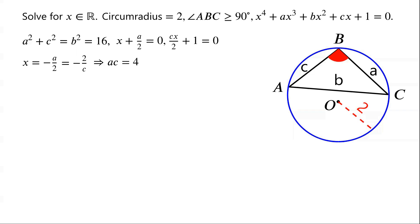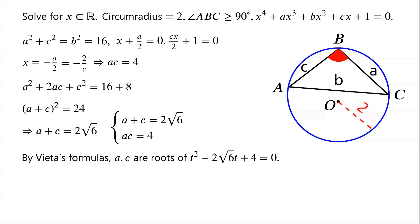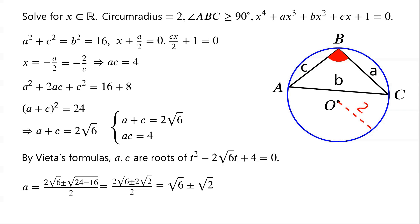As a squared plus c squared equals 16, and ac equals 4, we get a squared plus 2ac plus c squared equals 16 plus 8, which equals 24. That is, (a plus c) all squared equals 24, so a plus c equals 2 root 6. The negative value is discarded as a and c are greater than 0. Now we have a system of equations: a plus c equals 2 root 6, and ac equals 4. By Vieta's formulas, a and c are roots of the quadratic t squared minus 2 root 6 times t plus 4 equals 0. So a equals (2 root 6 plus or minus root of (24 minus 16)) over 2, which equals root 6 plus or minus root 2.